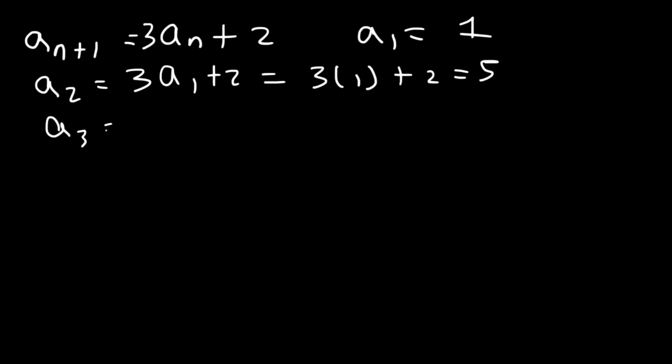Now if you want to find the third term, it's 3 times the second term plus 2. The second term is 5. 3 times 5 is 15, plus 2 is 17.